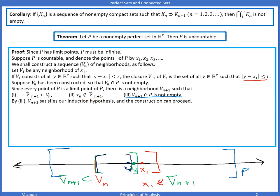By property three, V_{n+1} satisfies our induction hypothesis. We can just keep doing this process, excluding point X_n at each step. We're going to let K_n be the intersection of the closure of V_n with P — basically the sequence of nested neighborhoods. We know it's nested because of property one.